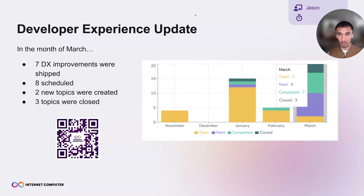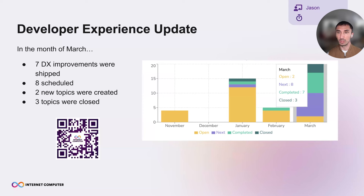For the month of March, I'm going to give you some statistics on developer experience topics and how we addressed them. In March, seven DX improvements were shipped, eight were scheduled for the coming weeks, two new topics were created, and three topics were closed. Let me give you some highlights of what we accomplished this month.